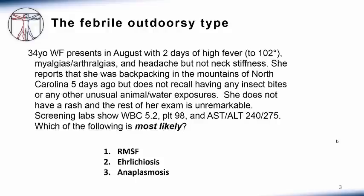Her screening labs show a normal white blood cell count, slight thrombocytopenia, and some elevation of her AST and ALT. Which of the following is most likely: Rocky Mountain Spotted Fever, Ehrlichiosis, or Anaplasmosis?